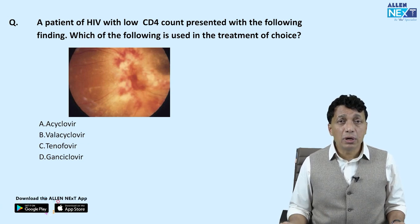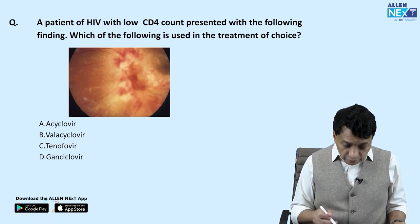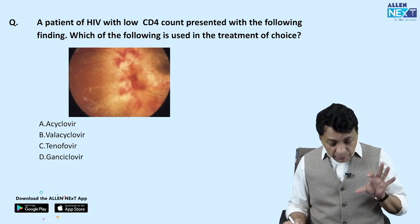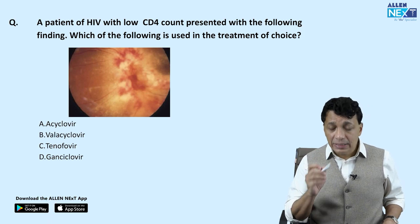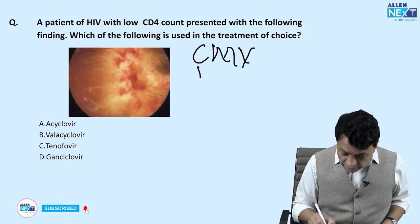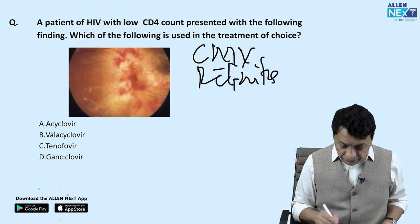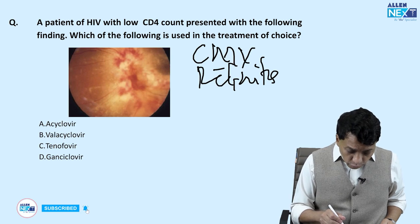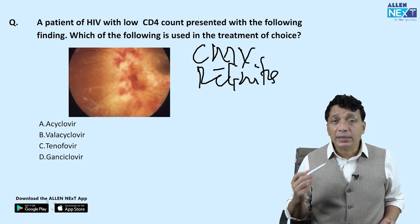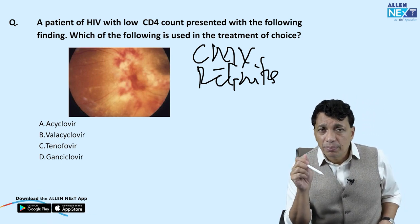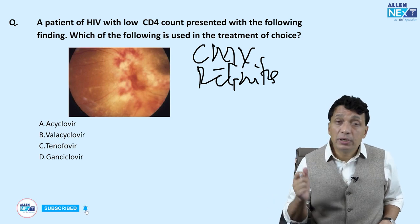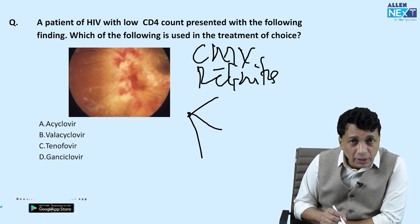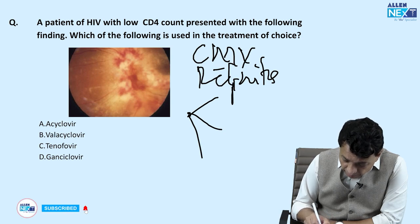Next question: a patient with HIV and low CD4 counts presents with a dramatic retinal picture showing red and white profusion. This is the famous CMV retinitis, with its most classic presentation called the tomato ketchup and cottage cheese appearance, also known as the pizza pie appearance — white necrotic retina plus red hemorrhages.